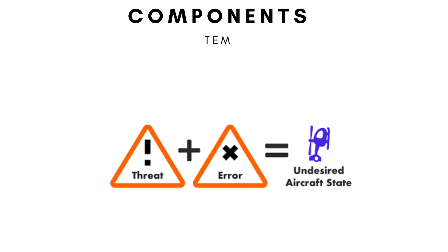The Threat and Error Management Framework consists of three primary components. Threats are events that occur outside the controller's control but increase complexity, such as unexpected weather changes or pilot errors. Errors refer to actions or inactions by air traffic controllers that deviate from standard procedures or expectations — these could be mistakes in communication or misunderstanding procedural requirements. Undesired states are situations where the safety margin is reduced, such as an aircraft being at the wrong altitude or on the wrong heading.